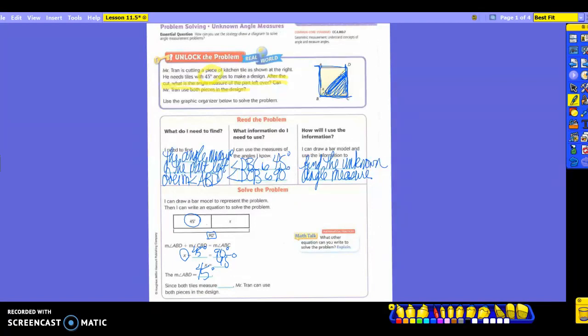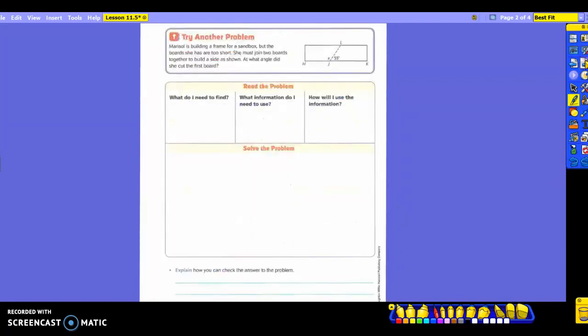So since both tiles measure 45 degrees, what's it telling us down here? That Mr. Tran can use both pieces in the design because it asks us if he can. That was our second question, right? So one was 45, we found the other one to be 45. So now that they're both 45, we know that he can use both of those pieces. This is just like a standard old addition problem, and we are using subtraction to come up with the unknown measure. Instead of using just regular numbers, we're using angles.